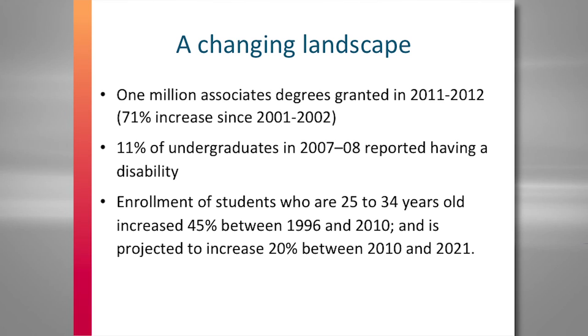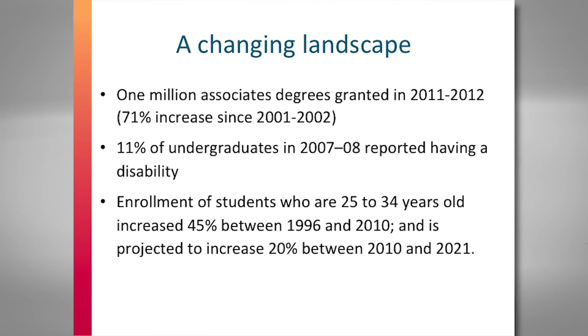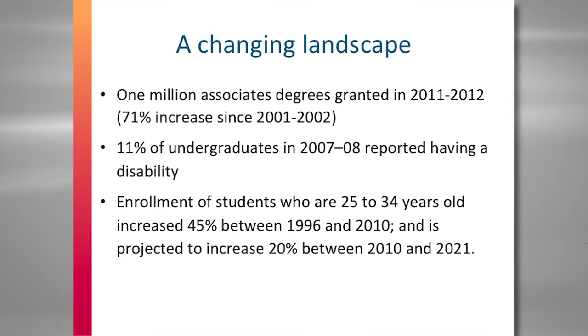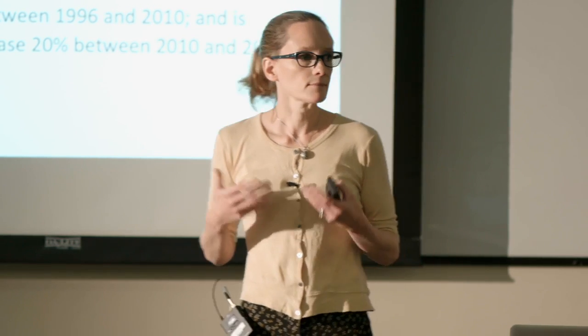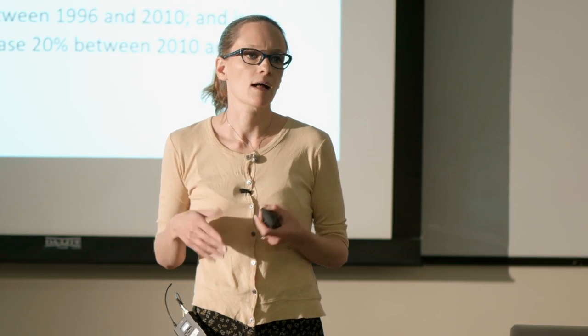We know that on average 11% of undergraduates have a disability, and we know that's an underinflated number because most people don't actually disclose if their disability is hidden in some way. Enrollment of English language learners and students who are 25 to 35 years old increased 45% between 1996 and 2010. Learner variability is absolutely the norm in these settings, and we need to think about responses that don't always accommodate for variability after the fact, but treat it as a rich part of a good learning environment.